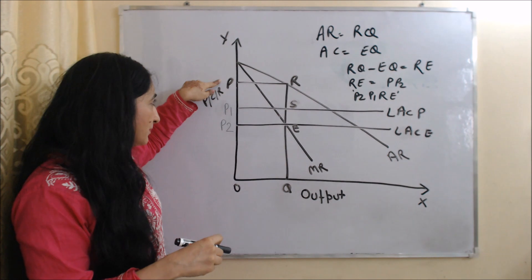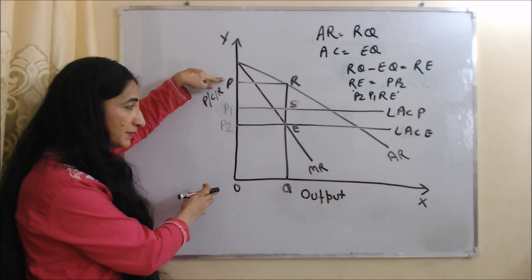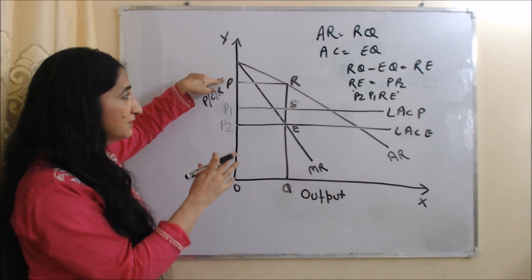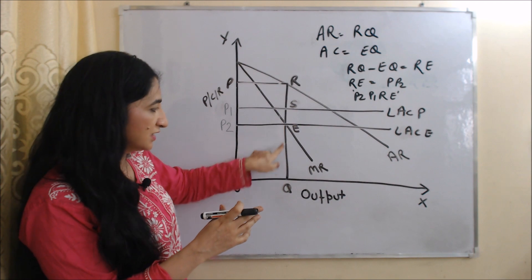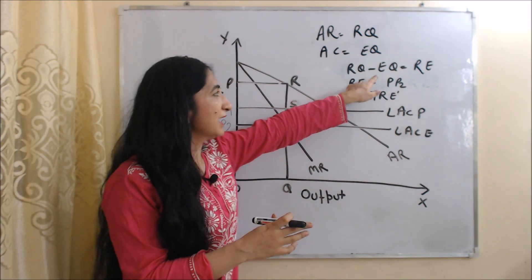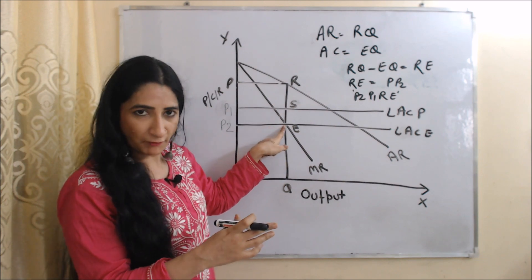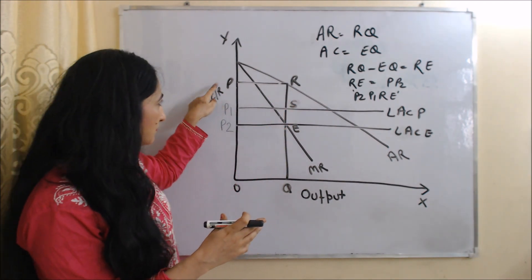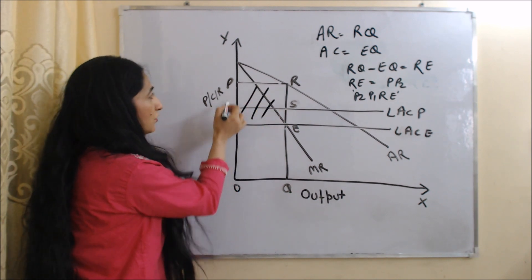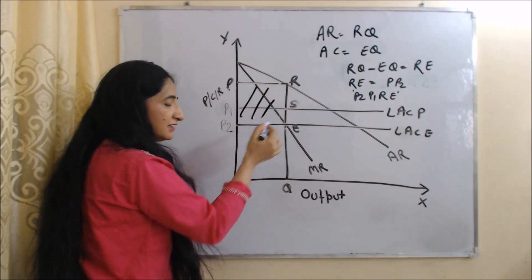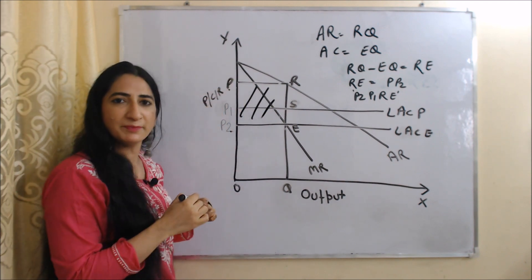OP is the monopoly price — it is the higher price. If the existing firm charges OP price, then their average revenue will be RQ and their average cost is EQ. RQ minus EQ equals RE, so RE will be their profit. RE is equal to PP2, so we can say that the whole area P2, P, R, E will be the profit of the existing firm at OP price.